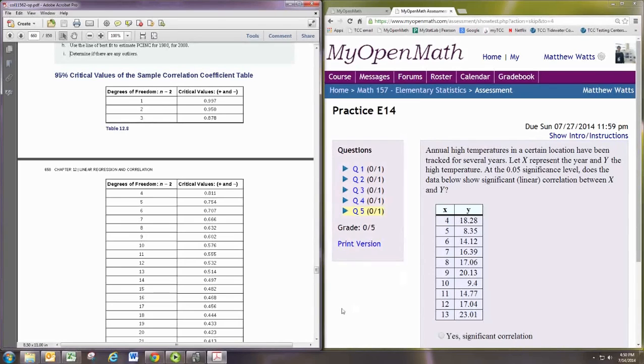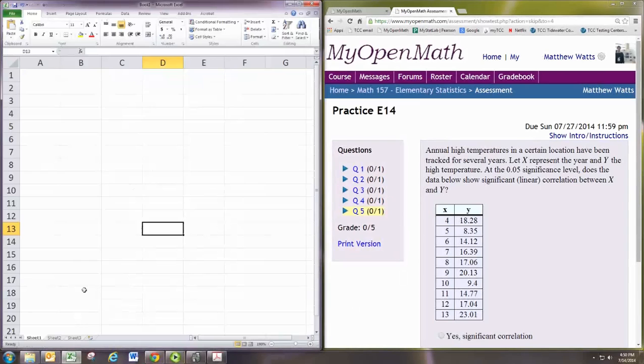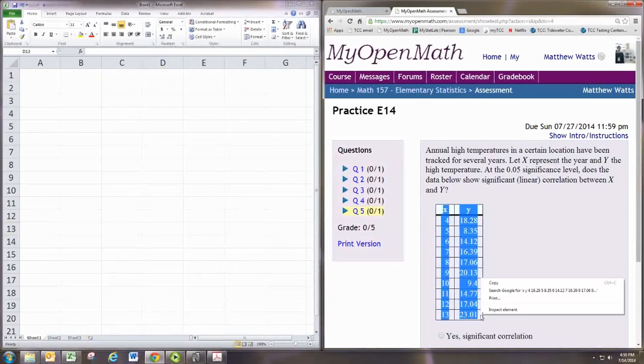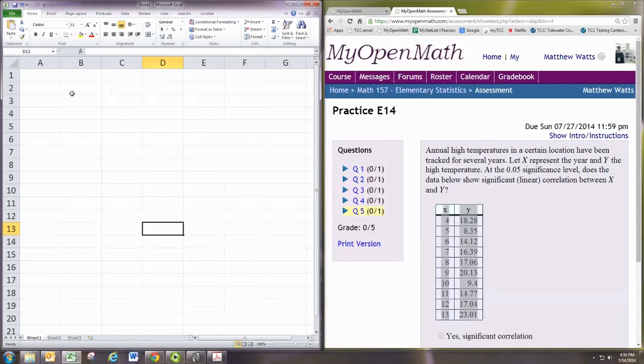First, we need to find the correlation coefficient. We've seen how to do this with Excel and with the graphing calculator. Just to review, copy the data in,